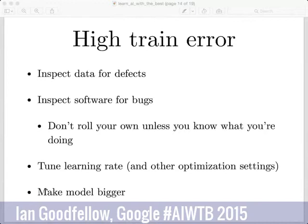If you have high training error, most textbook advice will immediately tell you to change your machine learning model, but I'd actually say the very first thing you should do is check whether your data has a problem — make sure it hasn't been collected poorly. If the data has defects, your algorithm won't be able to fit it. Next, inspect your software for defects, and specifically don't make your own software unless you definitely know what you're doing — using established software tested by many people is a good way to be relatively confident your high training error doesn't come from a bug.